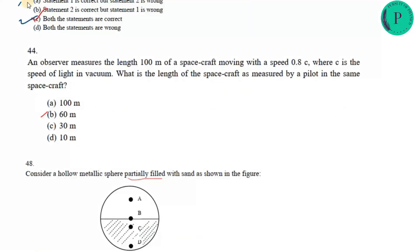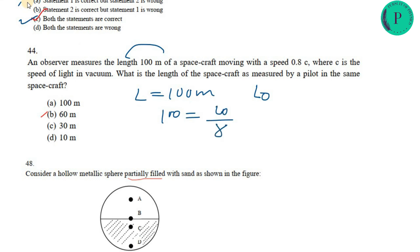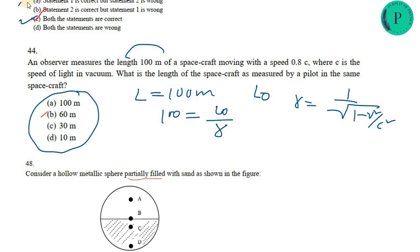A relativistic problem: an observer measures a spacecraft's length as 100 metres while it moves at v = 0.8c. The pilot measures the proper length L₀. Using L = L₀/γ, where γ = 1/√(1 − v²/c²) and v = 0.8c. The pilot, at rest relative to the spacecraft, always measures the proper length, which is greater than the contracted length observed by the external observer. Check the options carefully.